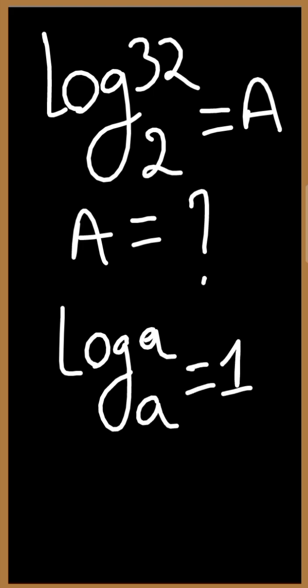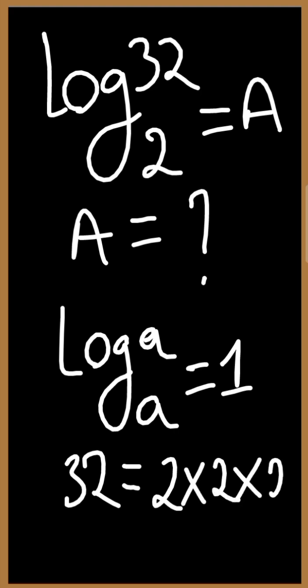First, we are going to start by expressing the number 32 in index form with 2 as the base. 32 is the same as: take 2 times 2, it gives us 4; 4 times 2 gives 8; 8 times 2 gives us 16; 16 times 2 gives us 32.